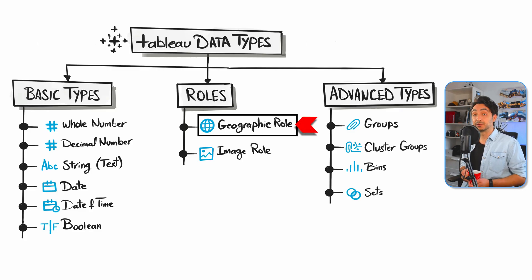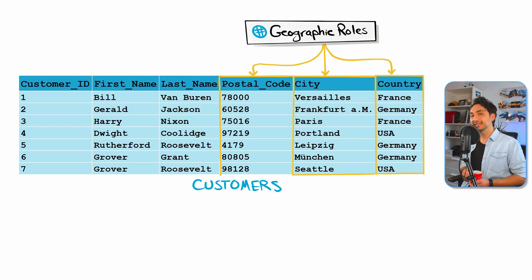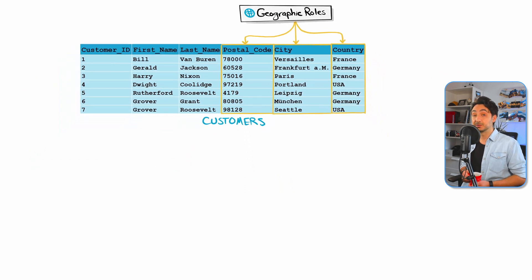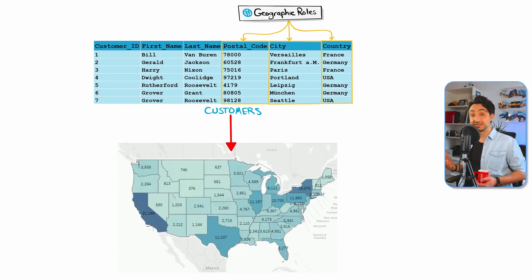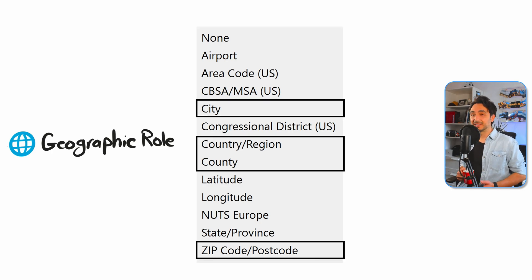The first role we're going to talk about is the geographic role. If you have a data field that contains location information or geographical areas, you can assign it to a geographical role in Tableau. Based on the type of location — such as city, country, or postal code — assigning this extra role can help Tableau plot your data correctly when using map visualizations. There are over 12 geographic roles, but the most important ones are country, city, and zip code.